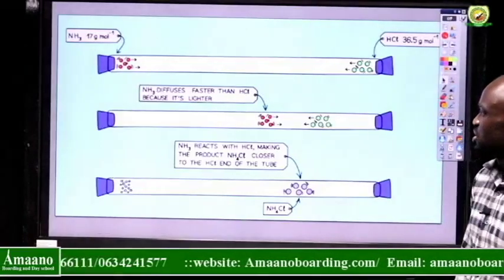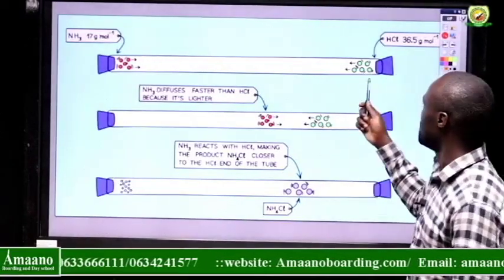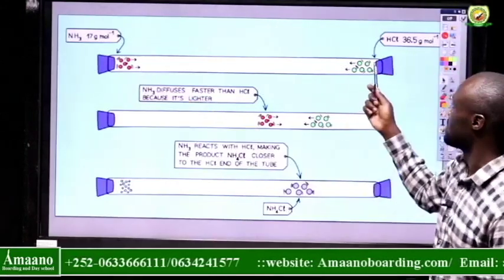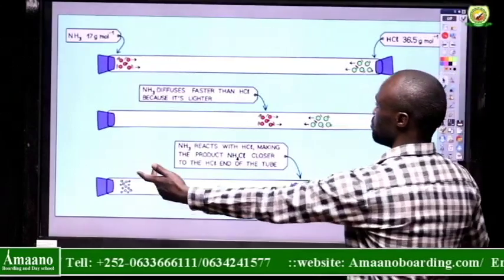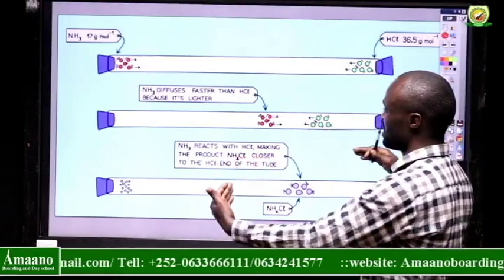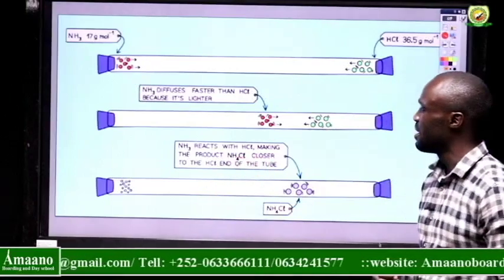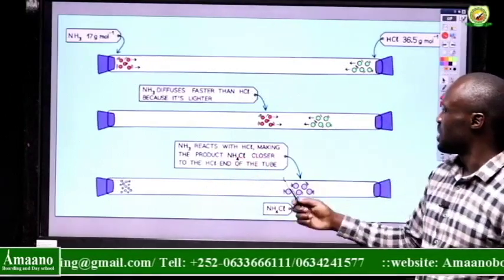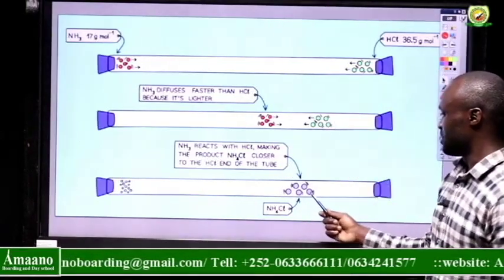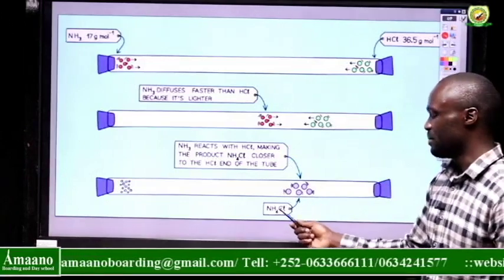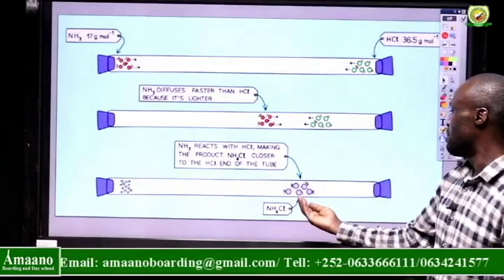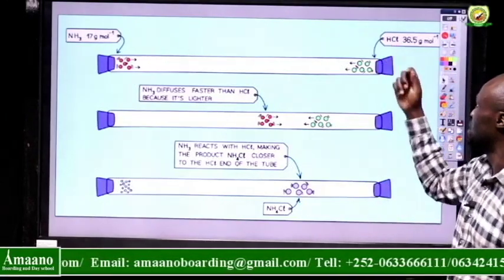Here is the illustration. At the beginning of the experiment, ammonia is at one end and hydrogen chloride at the other. As they start to move, you can see them diffusing towards the center of the tube, but ammonia has moved a longer distance than hydrogen chloride. Finally, when they meet, they react and form ammonium chloride, and the meeting point is towards the end with hydrogen chloride.